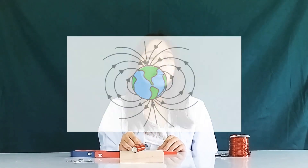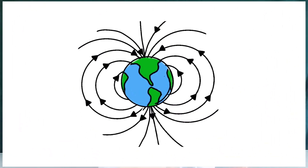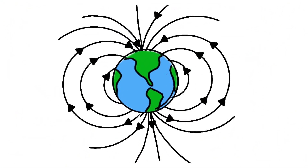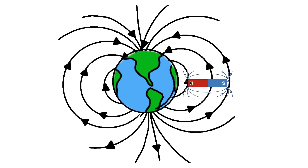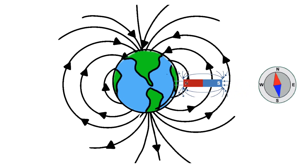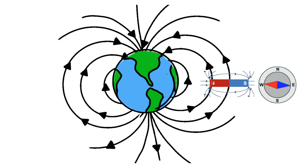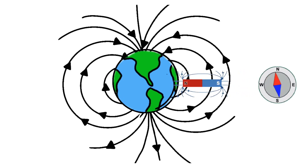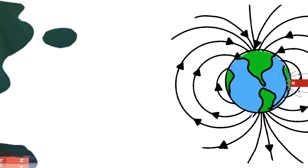Now take a look at this compass. What if I tell you that this compass has something to do with electromagnetism? Earth has a very strong magnetic field, making it a giant electromagnet. A compass works by aligning itself along the Earth's magnetic field.